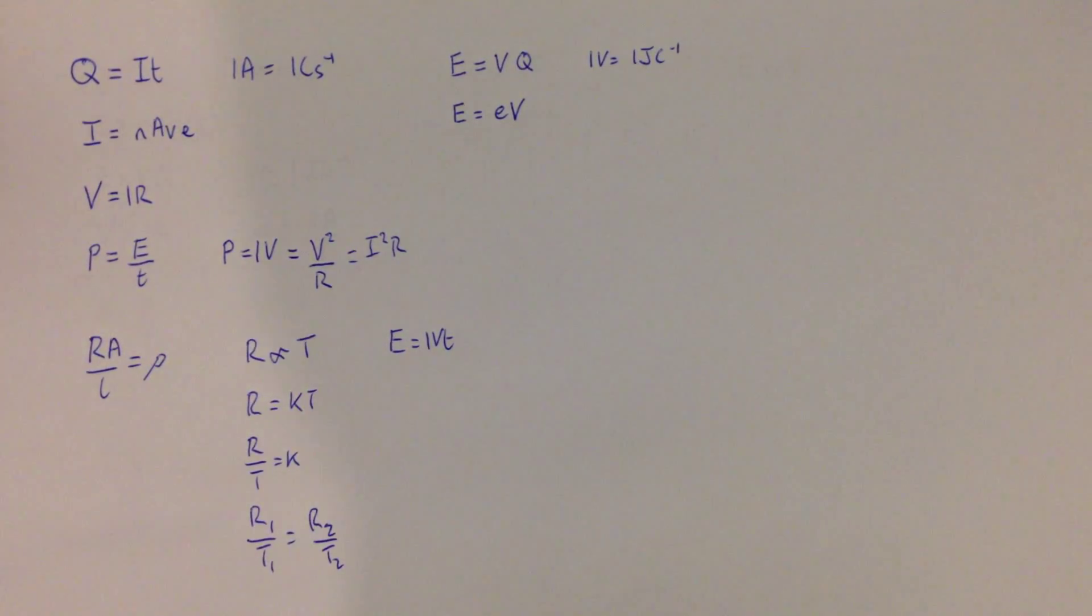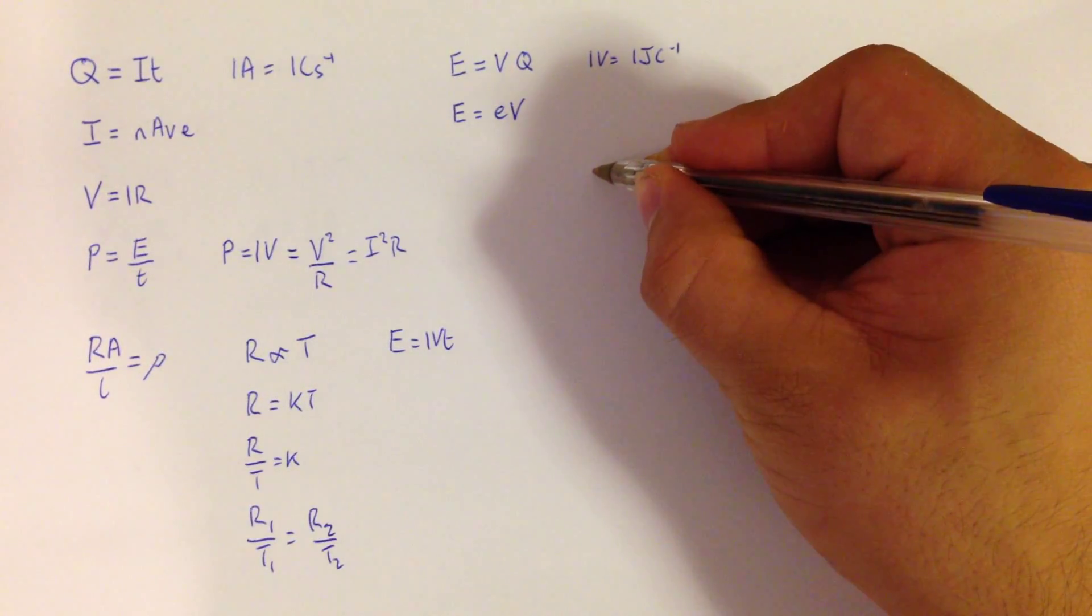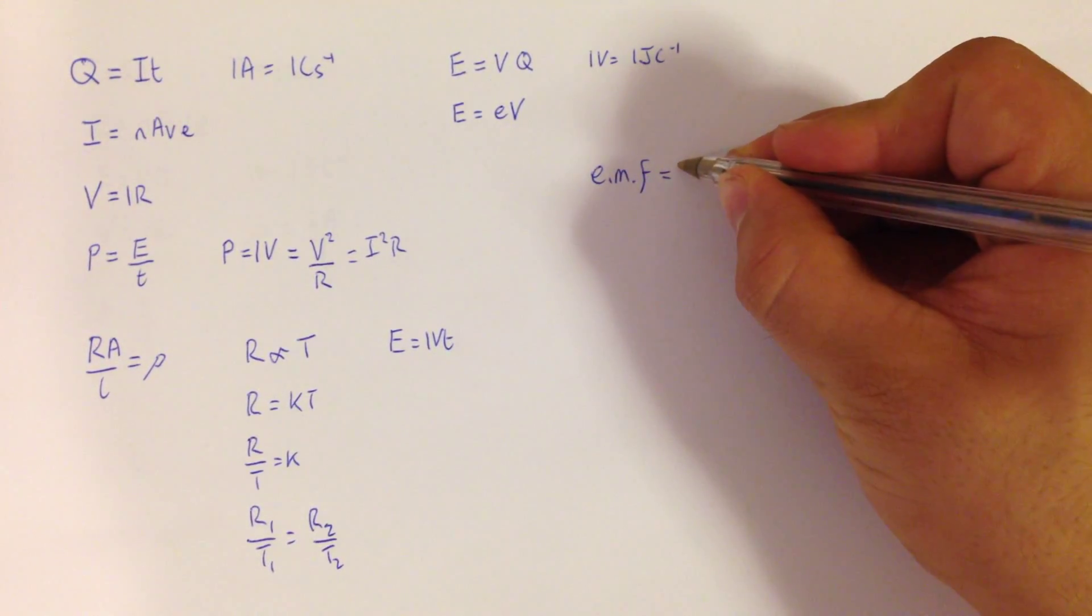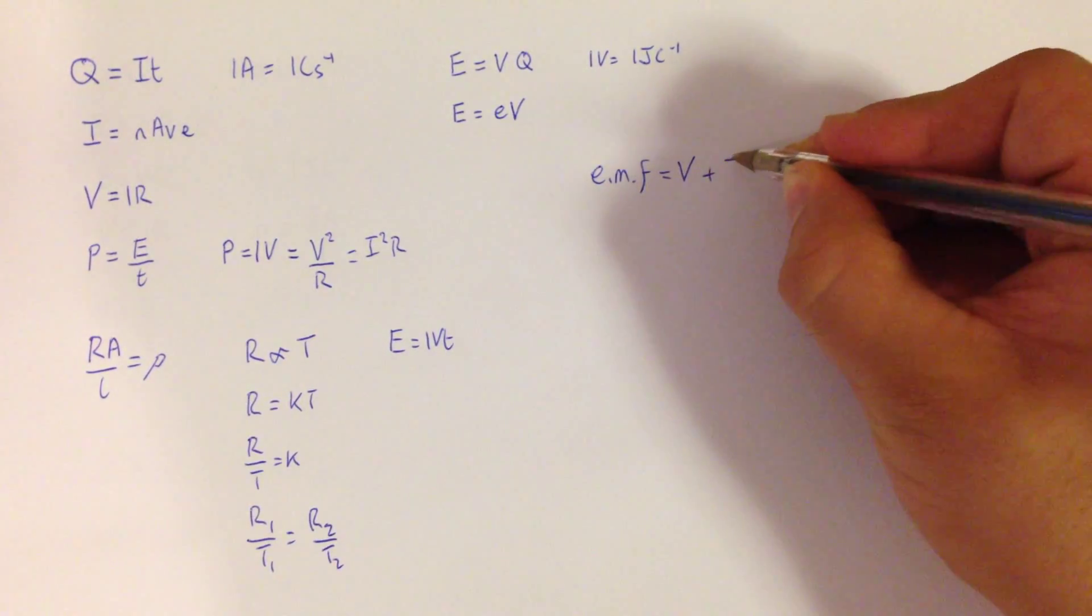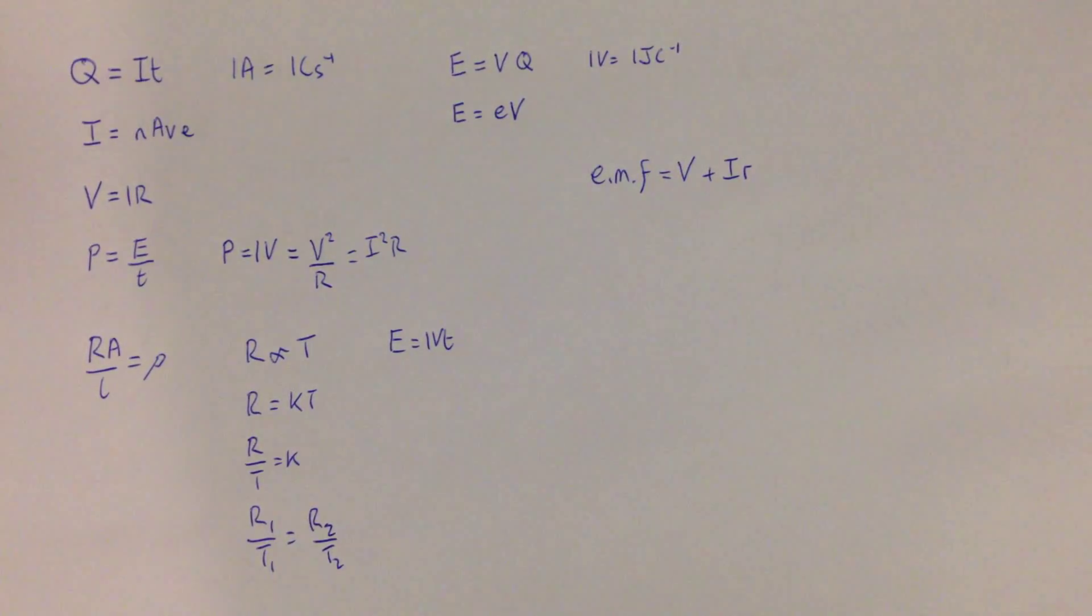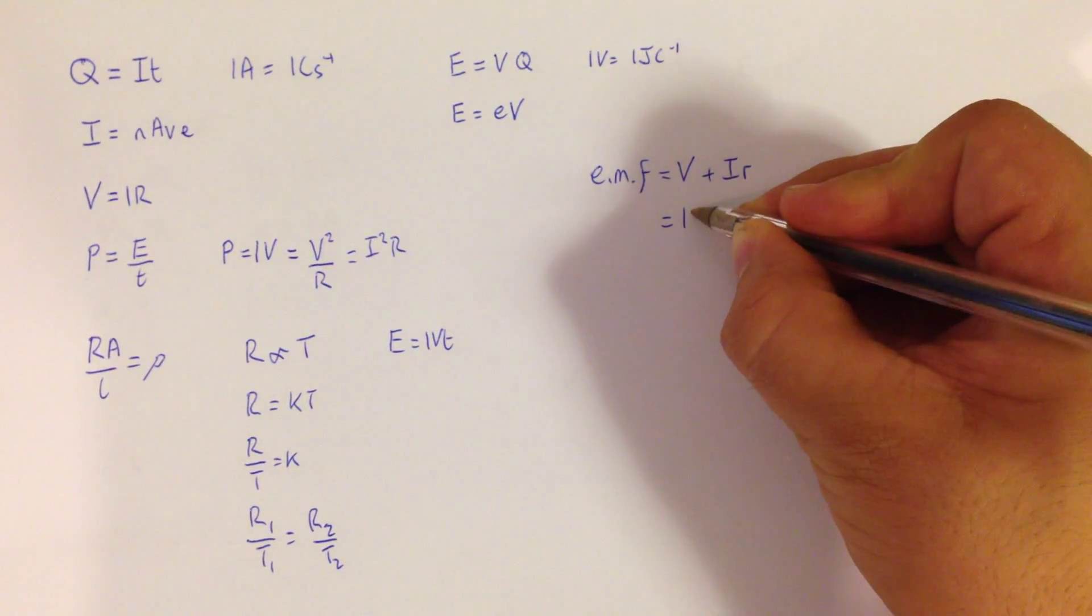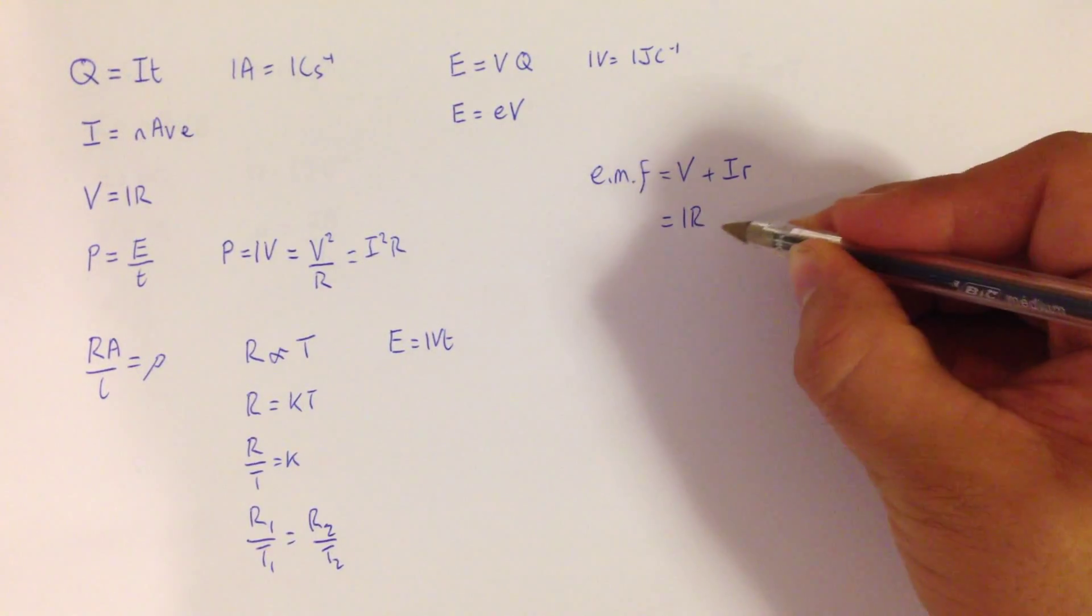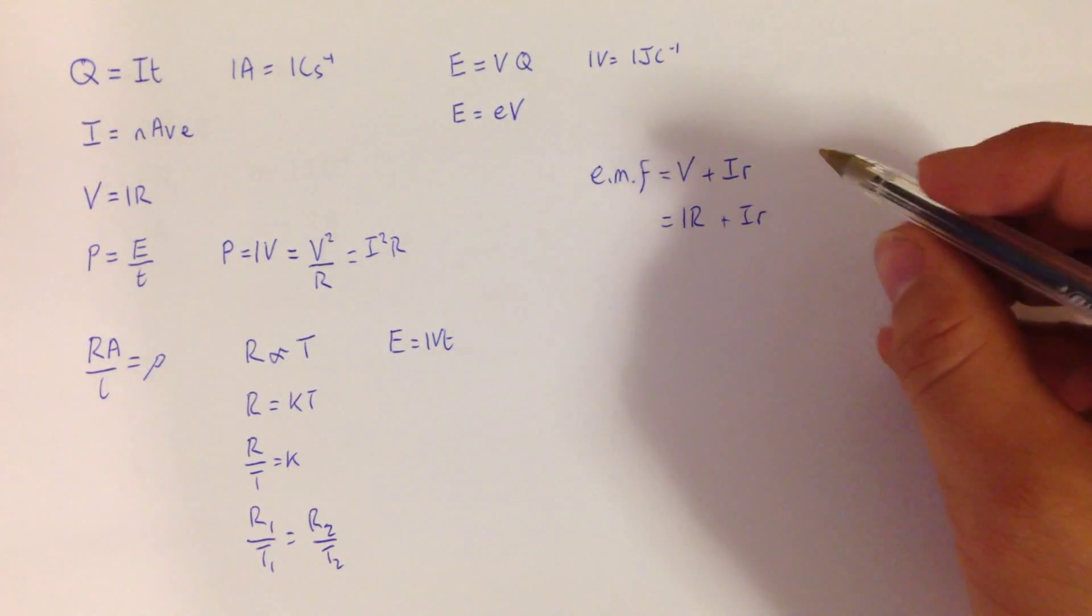The equations from module 3 are firstly the equation for EMF related to the internal resistance of a battery, which is the potential difference plus the current multiplied by little r, where little r is the internal resistance. This comes from an expression, which is that the EMF is equal to the resistance of the overall circuit plus the internal resistance, because we've got resistors in series.